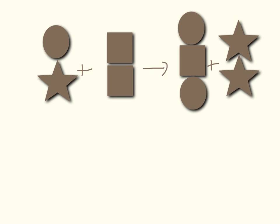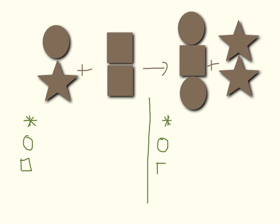So we need to be able to balance equations, and there are some really nice ways to do this. I always like my students to draw a line down the middle, just below where the reaction arrow is, and then make a little list of all of the things that are on each side of the equation. So here I have stars, circles, and squares.